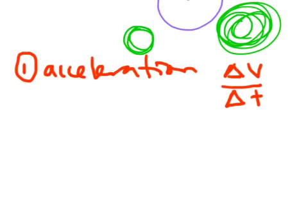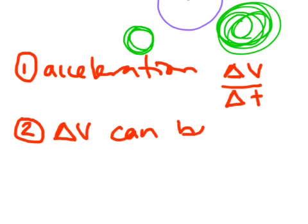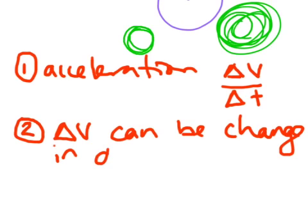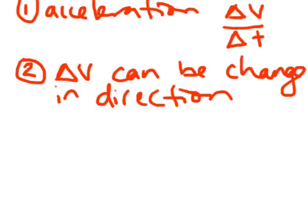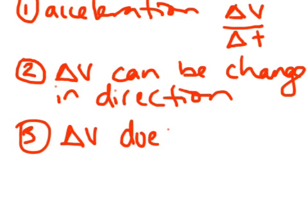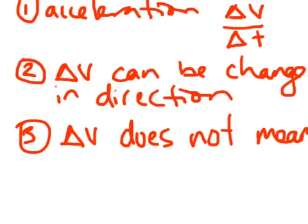Two: a change in velocity can be a change in direction. Now, this is going to make a bit more sense when I bring in the next part. A change in velocity does not automatically mean a change in speed.